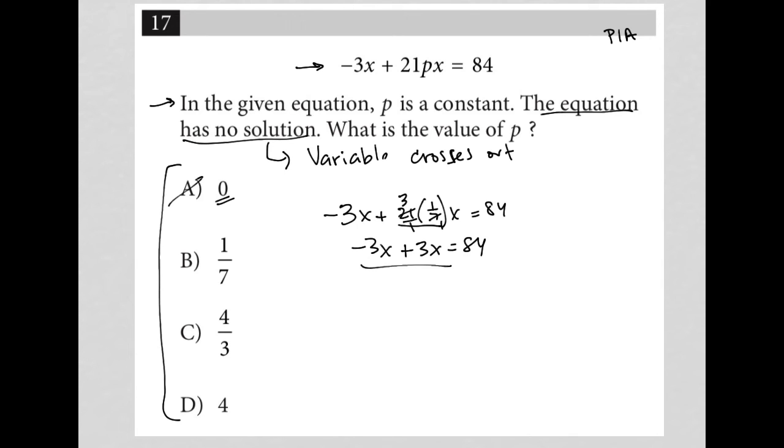Negative 3x plus 3x is 0x, or just nothing. So this whole thing becomes 0 equals 84, which is not true.